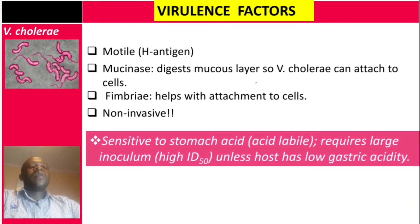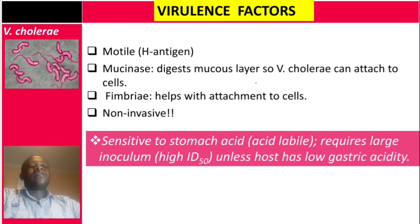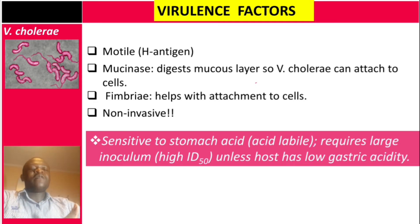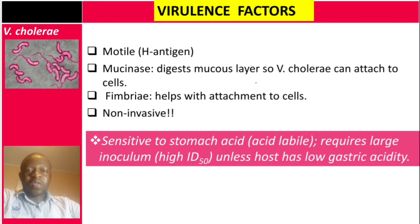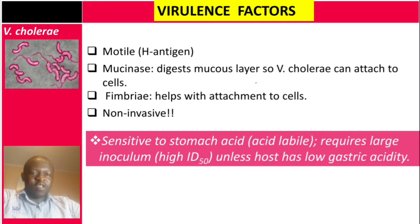Vibrio cholerae is sensitive to stomach acid — we call it acid labile. So for a patient to get this disease, it requires a large inoculum. Also, if the patient has low gastric acidity, that patient is at risk of easily getting cholera.